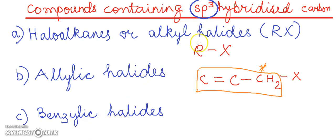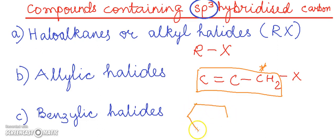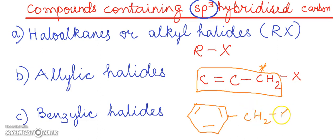The benzylic halides have the halogen atom attached to the sp3 hybridized carbon atom next to the aromatic ring. This means we have an aromatic ring with alternating single and double bonds, and here we have the methylene group to which the halogen is attached. We will understand more about this from the examples.